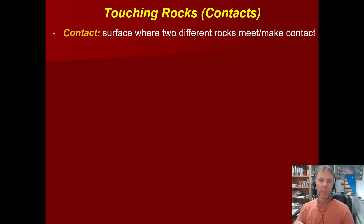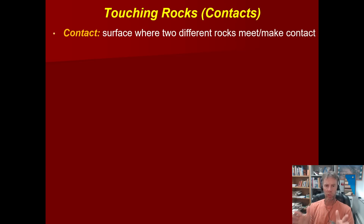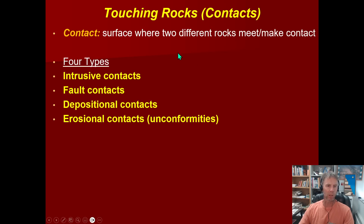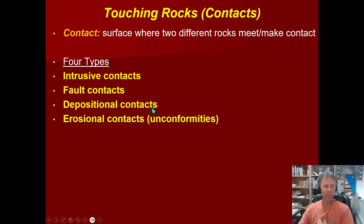Before we get into unconformities, which is going to be the main focus of today's lesson, we're going to first look at the nature of contacts — the surface that exists where two dissimilar rocks touch. There's a variety of ways in which two different rocks can be placed next to each other. We'll look at intrusive contacts caused by intrusions of magma, fault contacts when faulting places two different rocks next to each other, and depositional contacts where rocks are deposited atop one another.